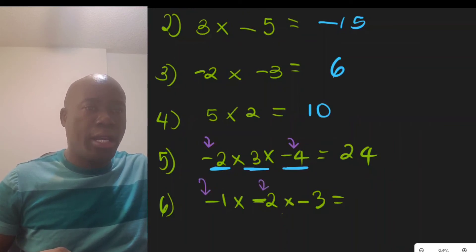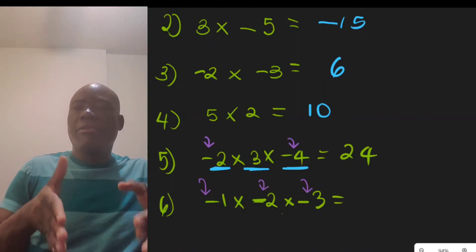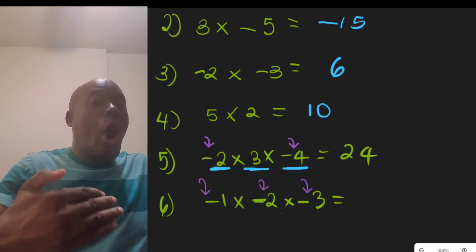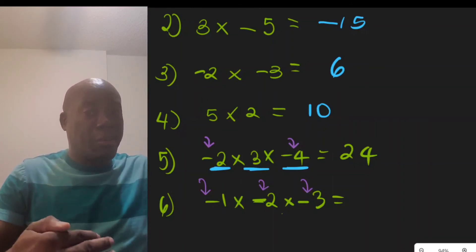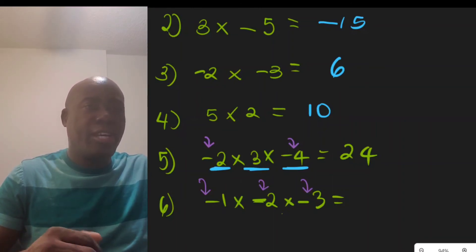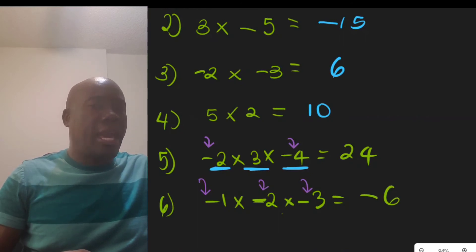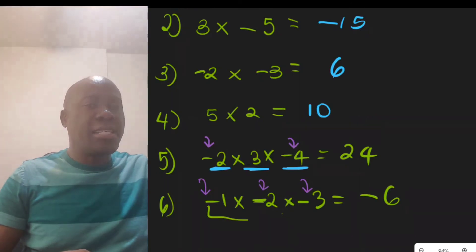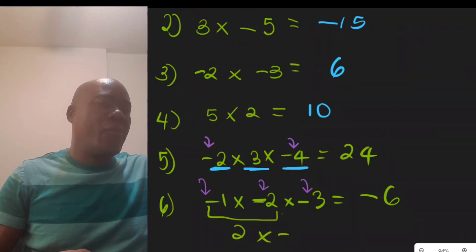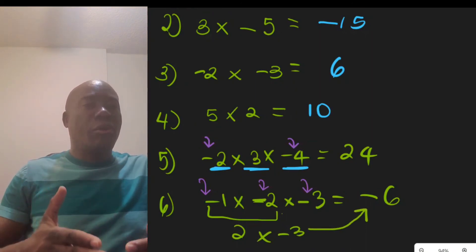For case 6, we have negative 1 times negative 2 times negative 3 — that's three negative numbers. The moment you have an odd number of negative numbers multiplying, the result will be negative. Negative 1 times negative 2 gives positive 2, but positive 2 times negative 3 gives us back negative 6.